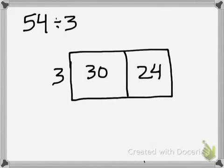So 30 and 24. Now I have to think backwards and say, okay, what times 3 will get me 30 and what times 3 will get me 24? In this case, I know 3 times 10 will get me 30, and I know 3 times 8 will get me 24.